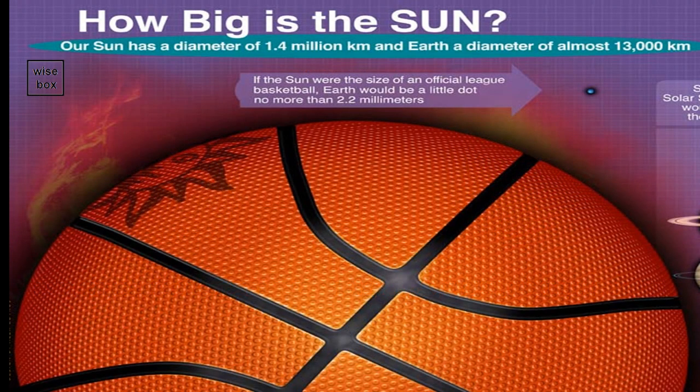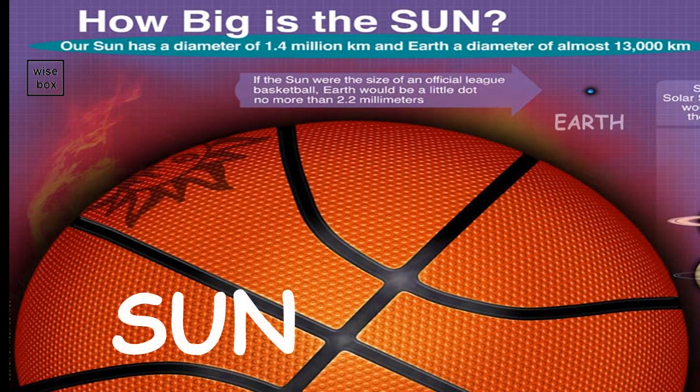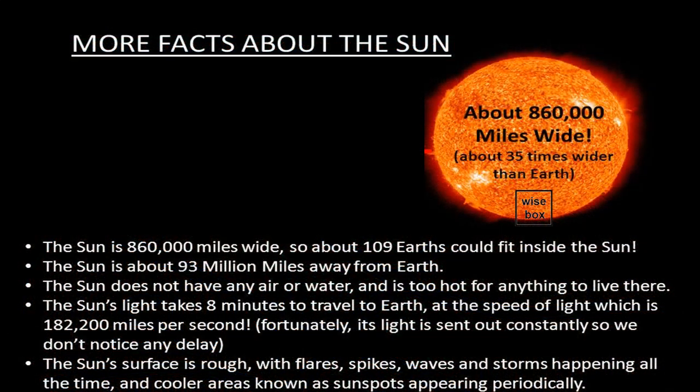How big is the Sun compared to our Earth? If the Sun is as big as a basketball, the Earth will just be a tiny dot. That is how big the Sun is. The Sun is 860,000 miles wide, so about 109 Earths can fit inside the Sun.